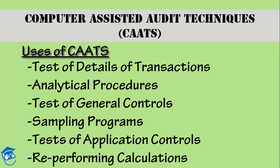What are CATs exactly? CATs are basically computer programs and data that you as an auditor use as part of your audit procedures to process data of audit significance, which is contained in the entity's information system.